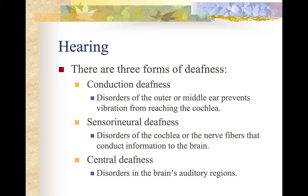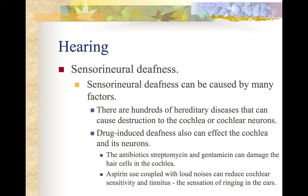Sensory neural deafness involves disorders of the cochlea or the nerve fibers that conduct information to the brain. Central deafness involves disorders in the brain's auditory regions. Only conduction deafness can be corrected — although if the cochlea is damaged, we can put an artificial cochlea on the skull. Sensory neural deafness can be caused by many different factors, including hundreds of hereditary diseases that can cause destruction to the cochlea or cochlear neurons. Drug-induced deafness can also affect the cochlea — the antibiotics streptomycin and gentamycin can damage the hair cells in the cochlea.